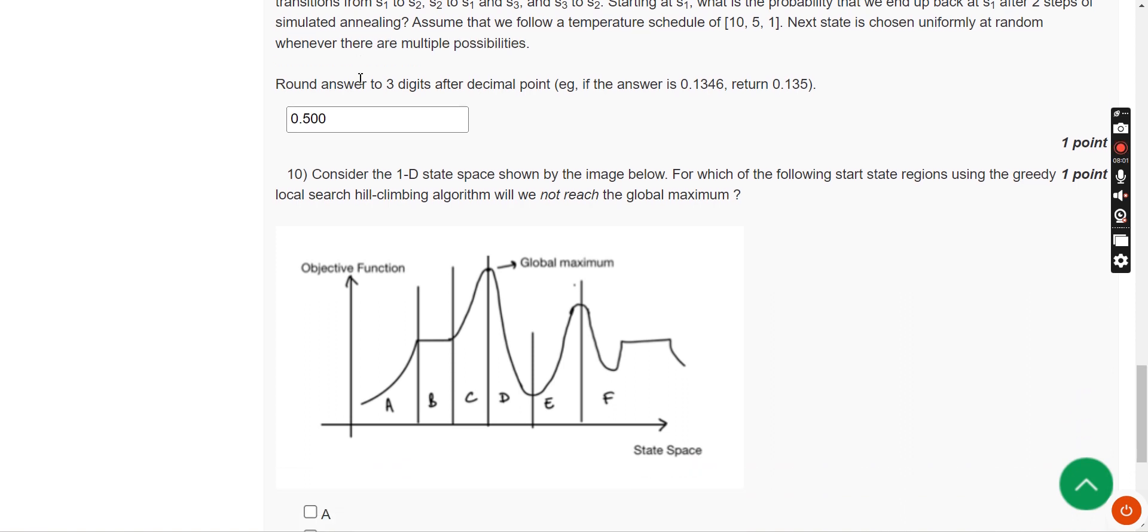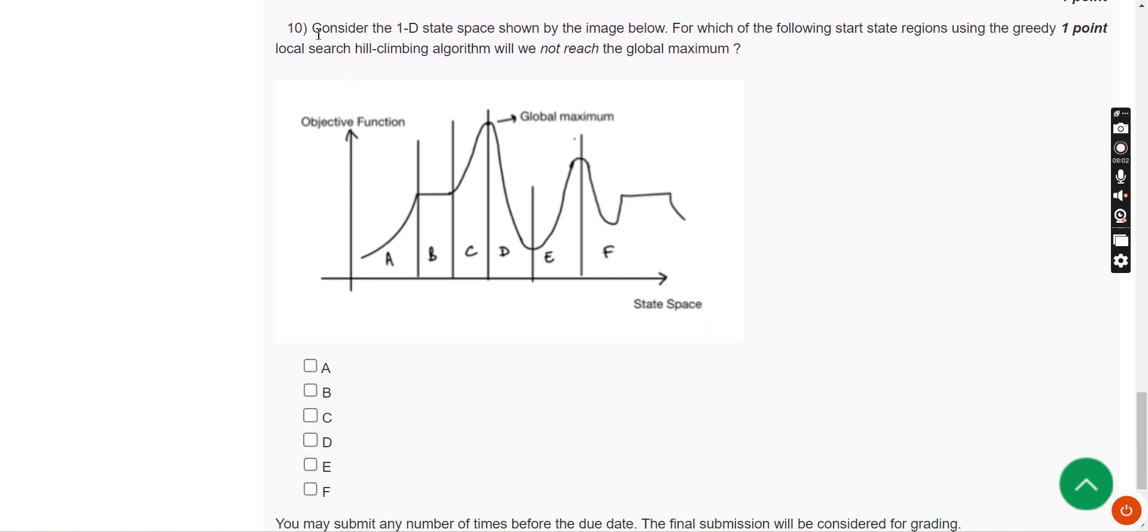Moving on to the final question of the assignment, that is the tenth one. Consider the 1D state space shown by the image below. For which of the following start state regions, using the greedy local search hill climbing algorithm, will we not reach the global maximum? For the tenth question, options A, B, C, and F are the probable solutions that I have got. Friends, these are the probable solutions for week 4 assignment. Hope this video was helpful for you.